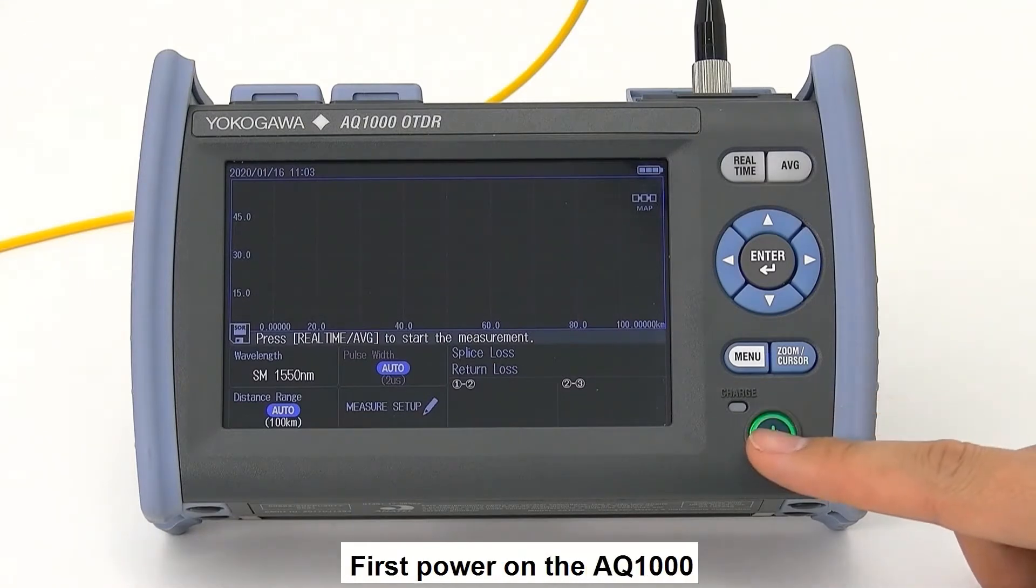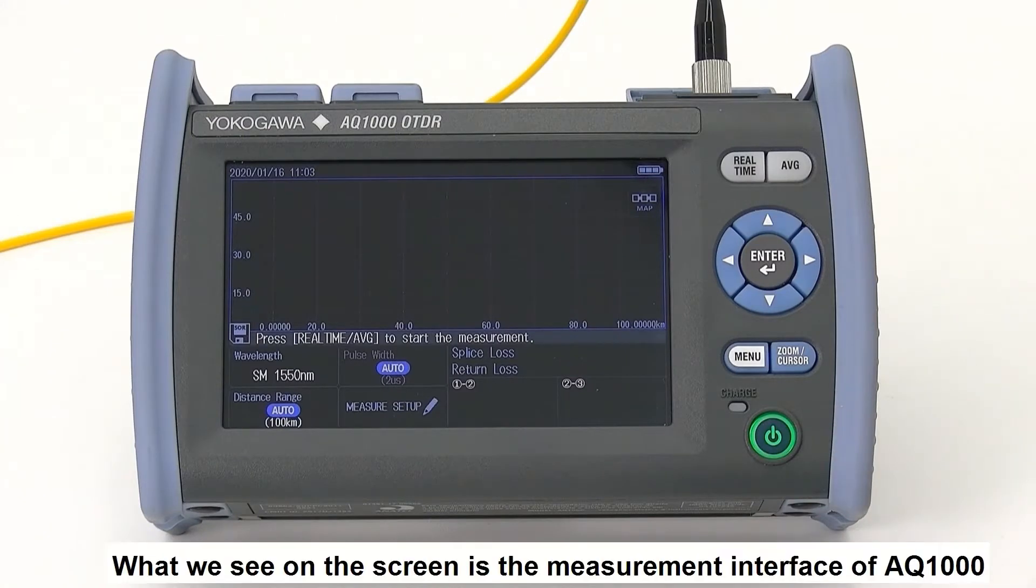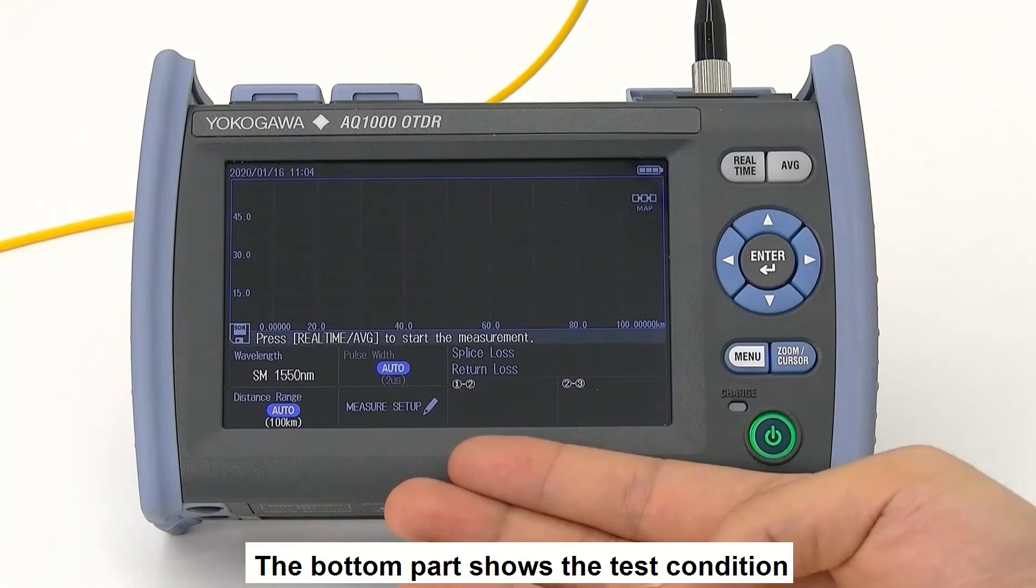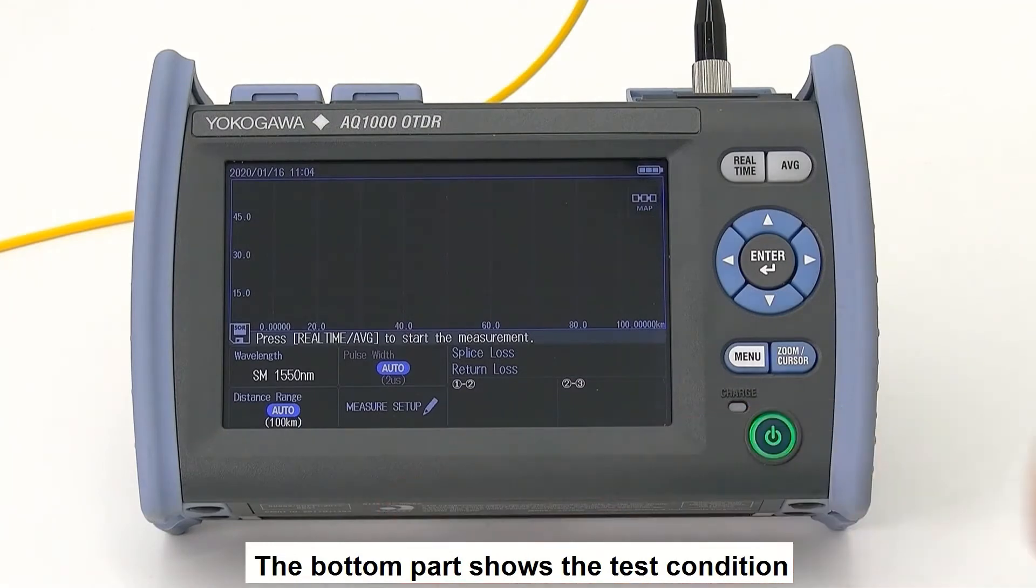First, power on the EQ1000. What we see on the screen is the measurement interface of EQ1000. The upper part shows the test trace, the bottom part shows the test collision.